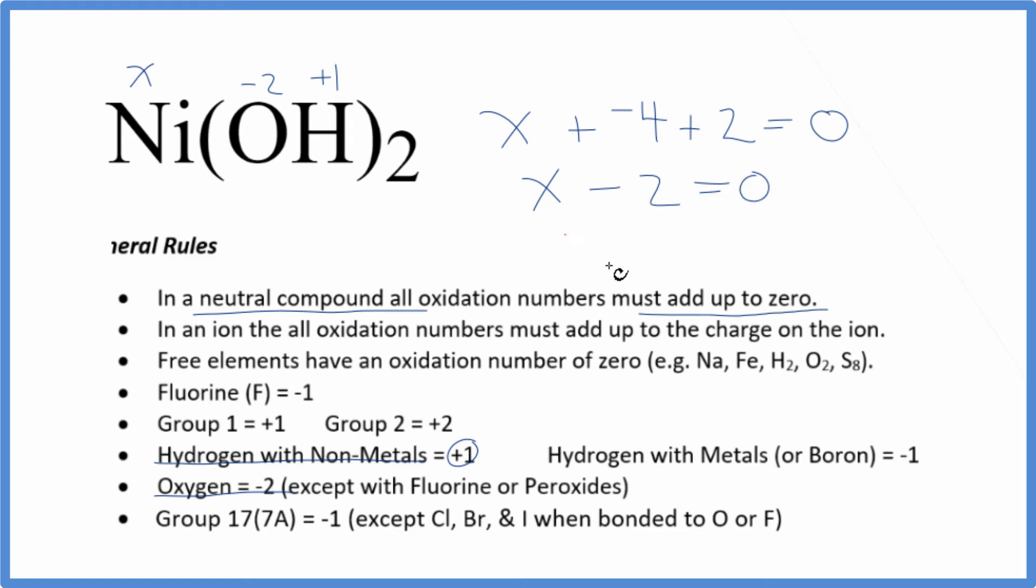We get X equals a positive 2. The oxidation number on the Ni in Ni(OH)₂ is a positive 2. If we add up all of the oxidation numbers for each atom, they'll equal 0 because this is a neutral compound.